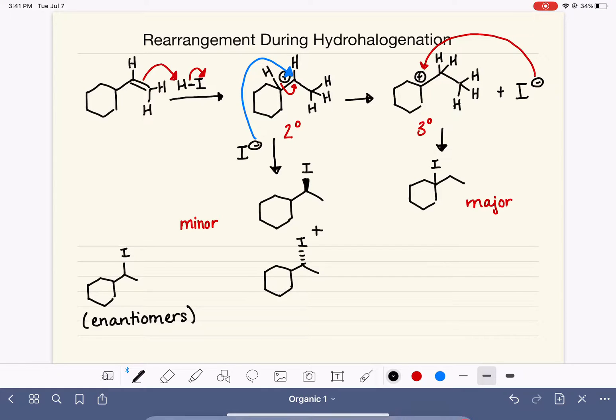Another way that we could express it would be to draw one, either one, of the stereoisomers. I'll draw the one with the wedge, and then underneath it write, and enantiomer, or plus enantiomer, which is saying that we are making this molecule as well as its enantiomer.